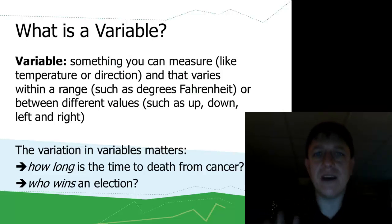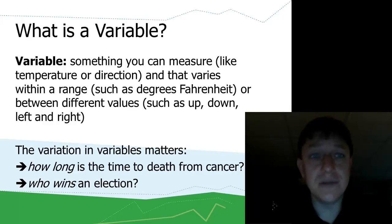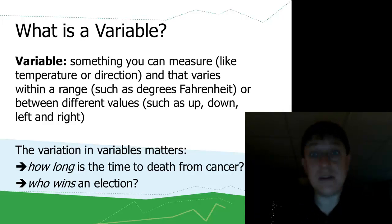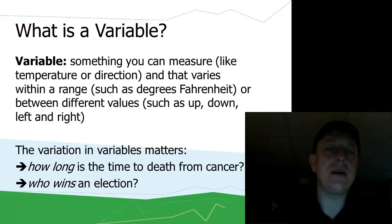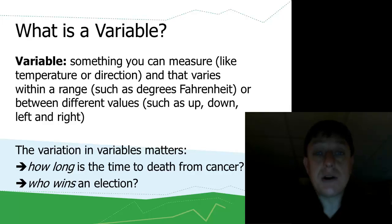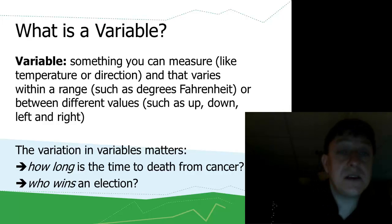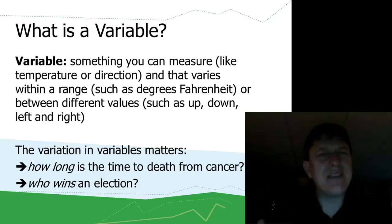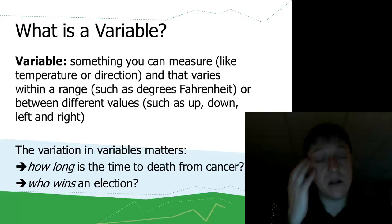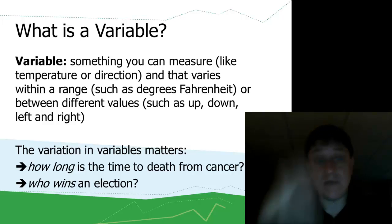Let's start with the idea of a variable. What is a variable? A variable is simply something that you can measure that varies — that's all a variable is. It could be something like temperature that goes up and down in terms of degrees Fahrenheit or Celsius, or it could be something like direction that has different values that might not have numbers associated with them, like up versus down.